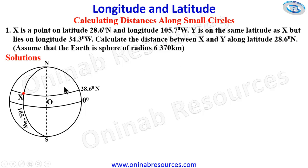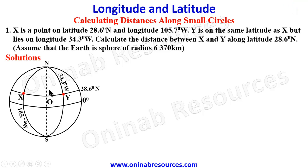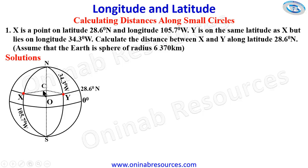The second point Y still lies on the same latitude — latitude 28.6 degrees north — but on a different longitude: 34.3 degrees west. We have longitude 34.3 degrees west and this is point Y. This is a small circle with center C and small radius r.